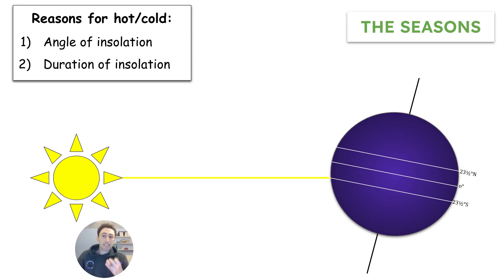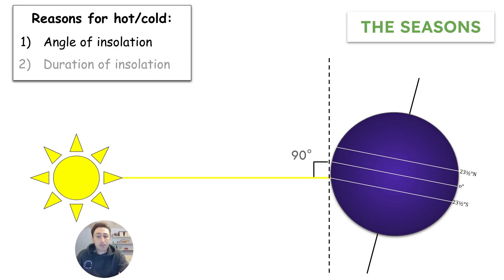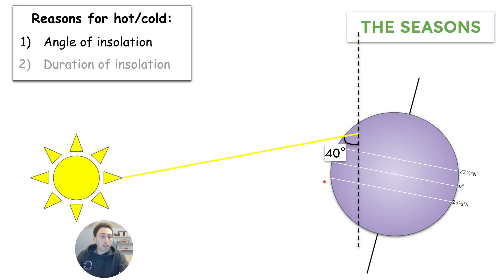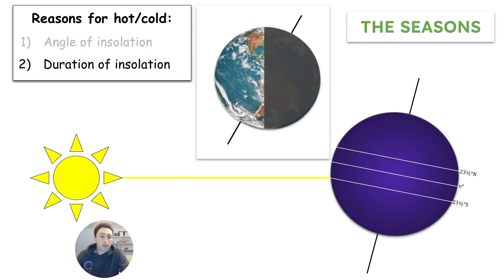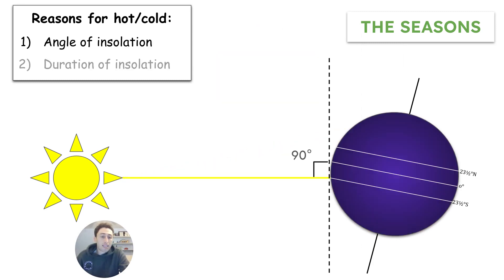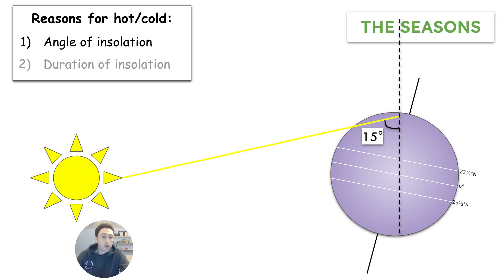The first way is the angle of insolation. If a place gets direct sun rays at a 90-degree angle, that is the most intense angle — that is going to be the hottest place on Earth. If it's a lesser angle, like 40 degrees or 15 degrees, it won't be as hot; it will be much colder. If you have direct sun rays, it's going to be the hottest, compared to a place at the North or South Pole, which will get less direct sun rays.